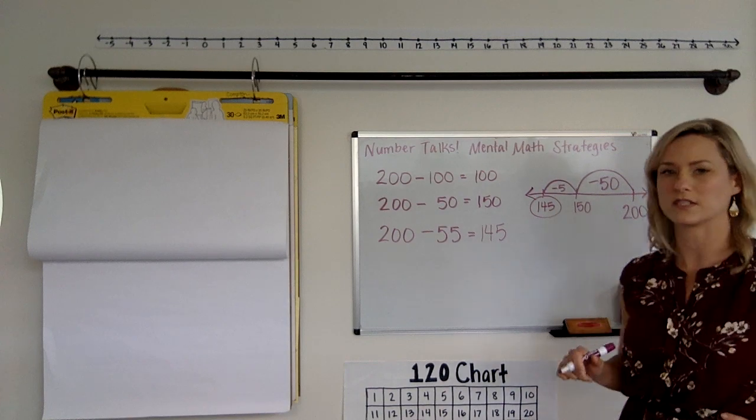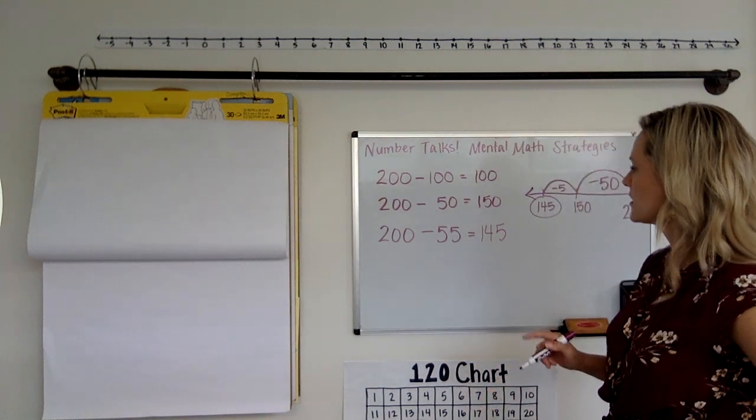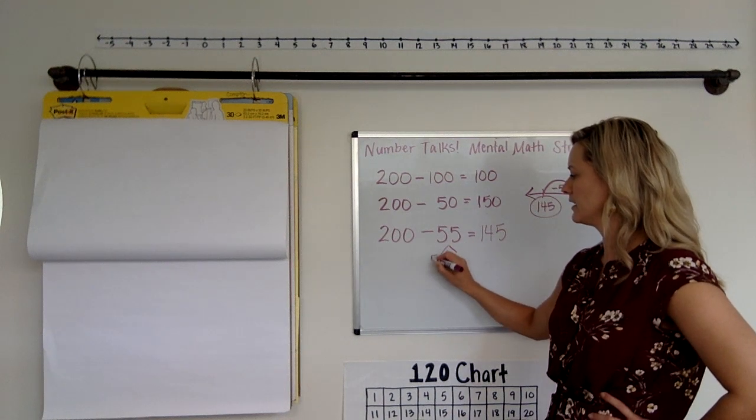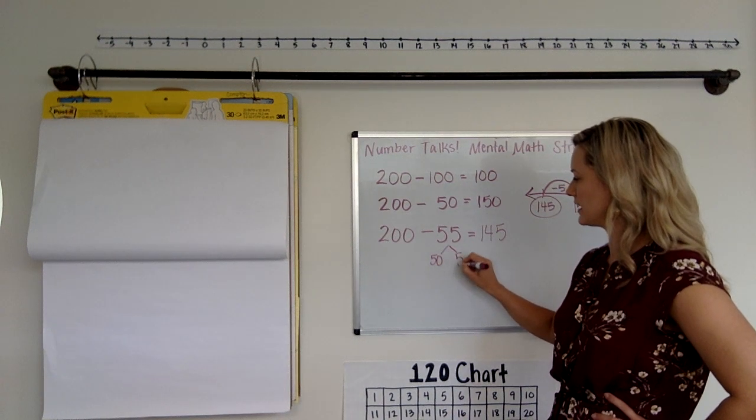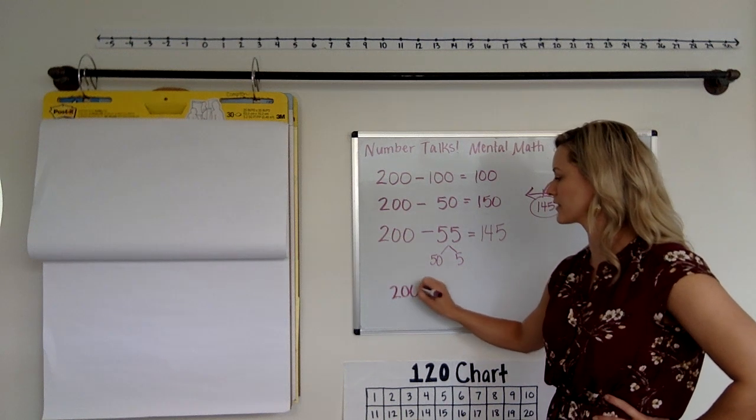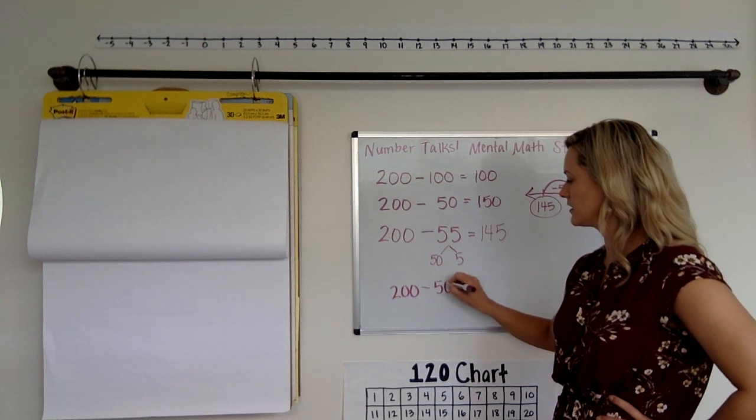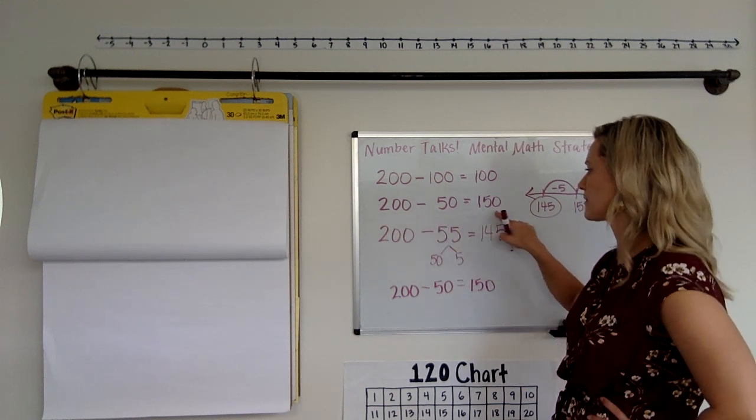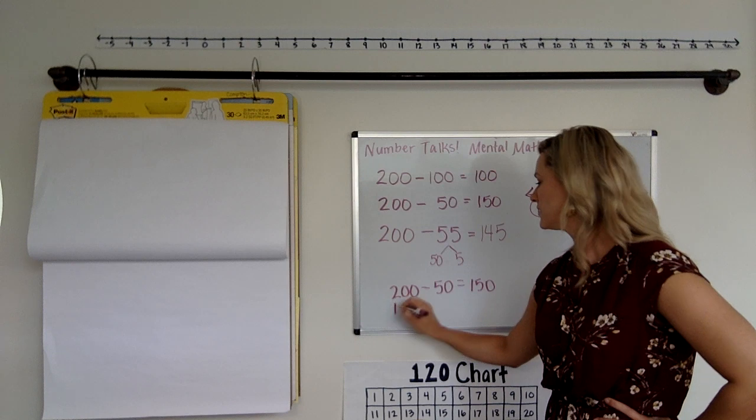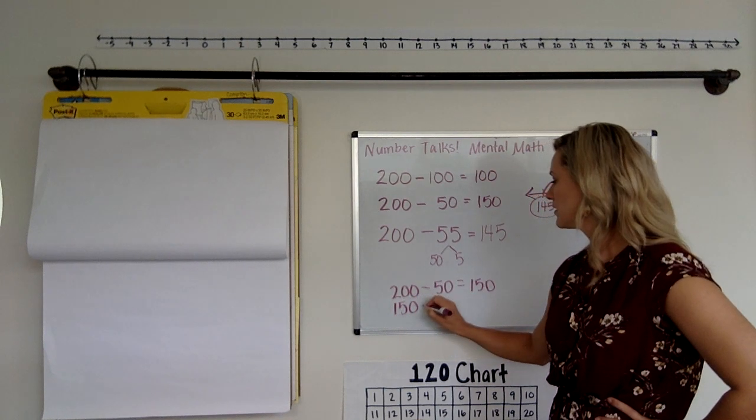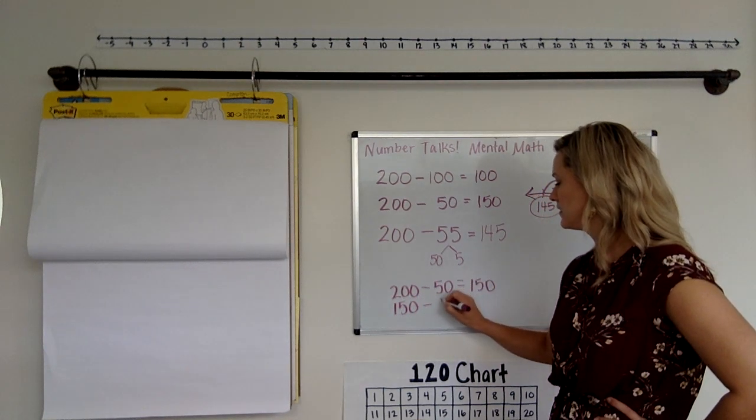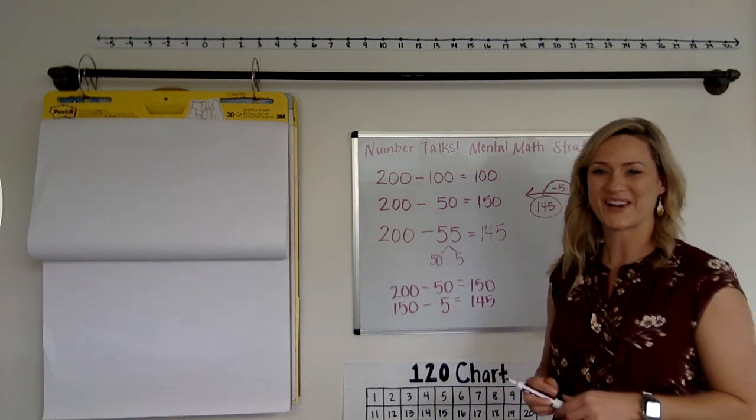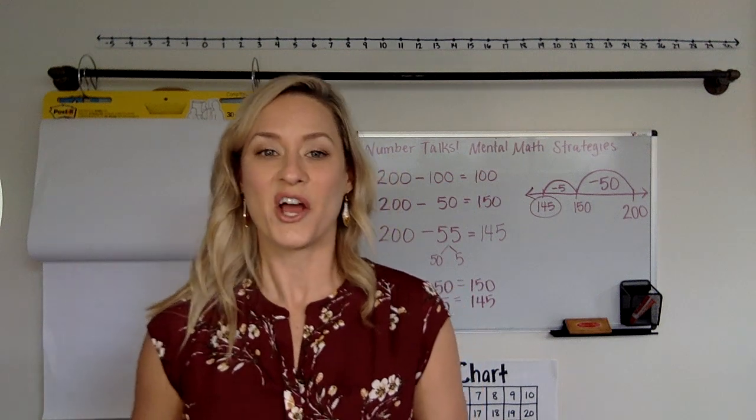What's another way that you thought to solve this problem? So I bet some of you probably even did split the 50 and the 55. And I bet some of you actually did 200 minus 50 equals 150 because you knew that from the last problem. And then 150 minus that last five would be 145. Good thinking there, kids.